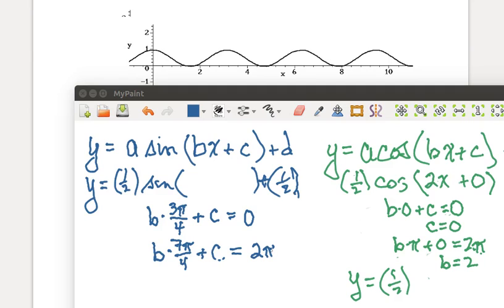So we need to find b and c so that they make bx plus c be equal to 0 when x is 3 pi over 4, and it makes bx plus c equal to 2 pi when x is 7 pi over 4.